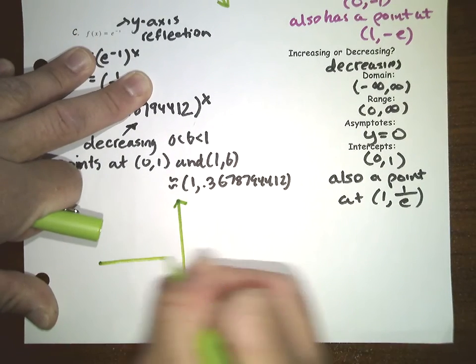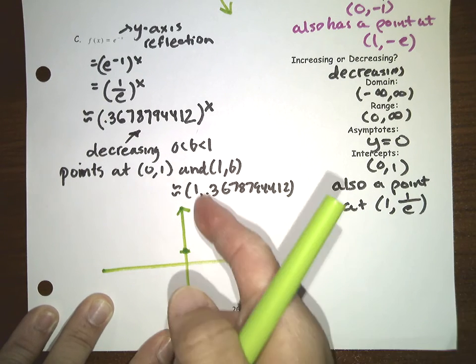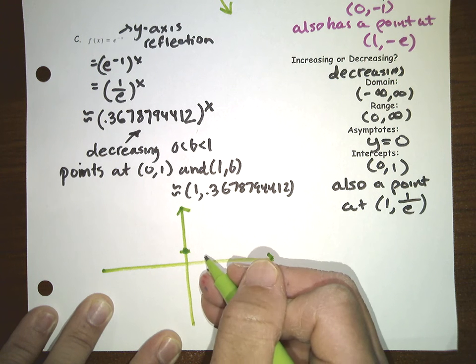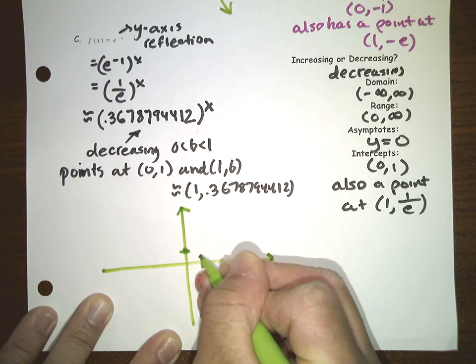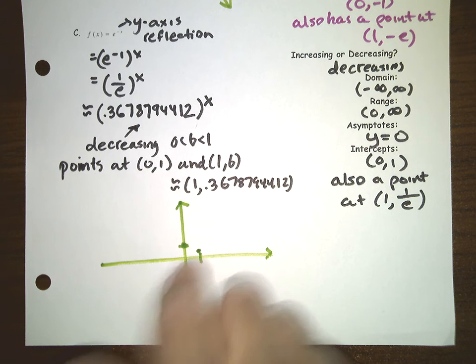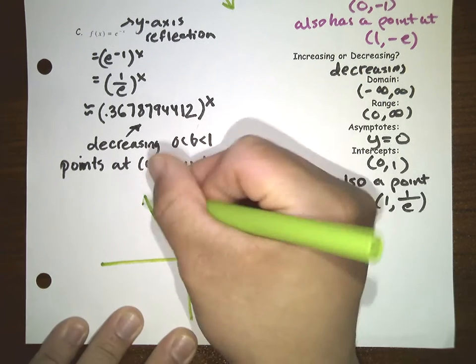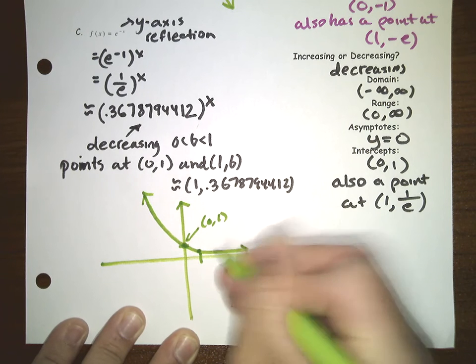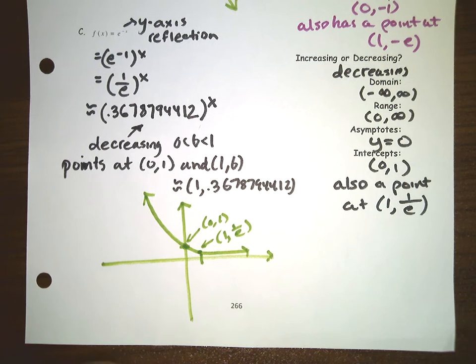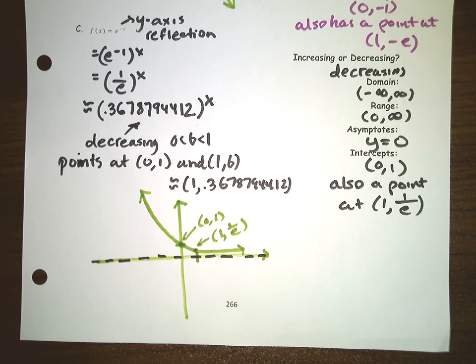Let's graph this function. There's a point at (0, 1) and at (1, 0.3678794412) — so at 1 and a little bit over, somewhere right about there. I know it's decreasing, so the graph looks like this. Here is (0, 1) and here is (1, 1/e). I can even draw the asymptote to make it clear the graph will not go below the x-axis.